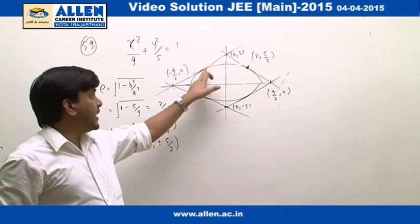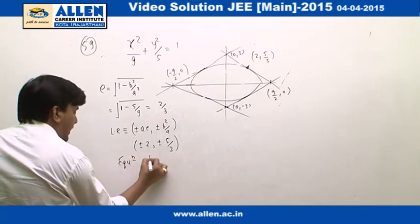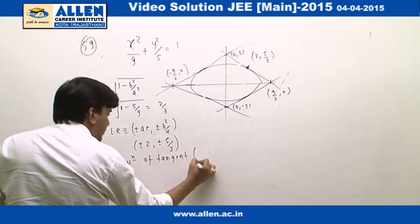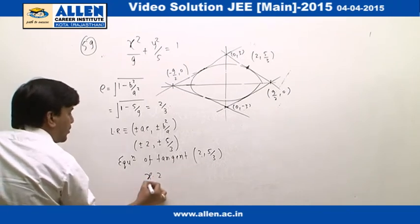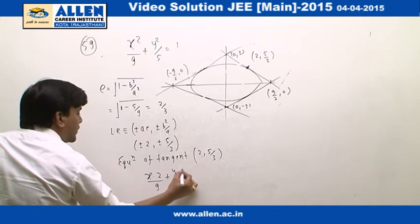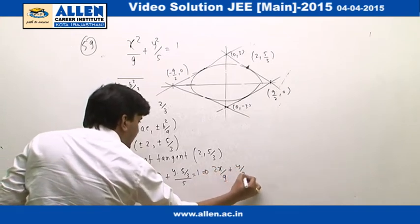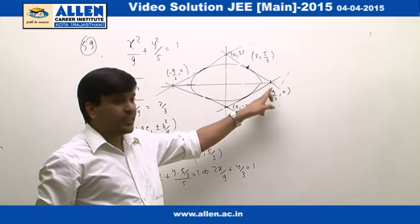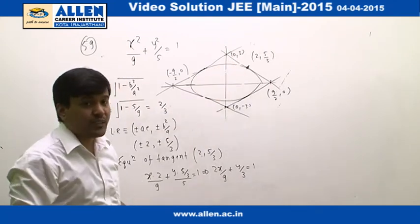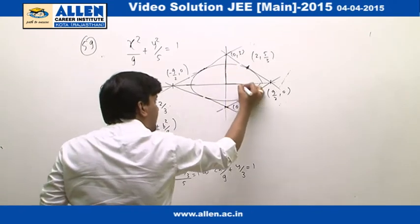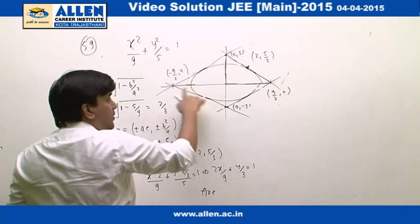We write the equation of the tangent at (2, 5/3). The tangent is xx₁/9 + yy₁/5 = 1, giving 2x/9 + y/3 = 1. The x-intercept is (9/2, 0) and the y-intercept is (0, 3). We can calculate the area of this triangle and multiply by 4 to get the area of the entire quadrilateral.